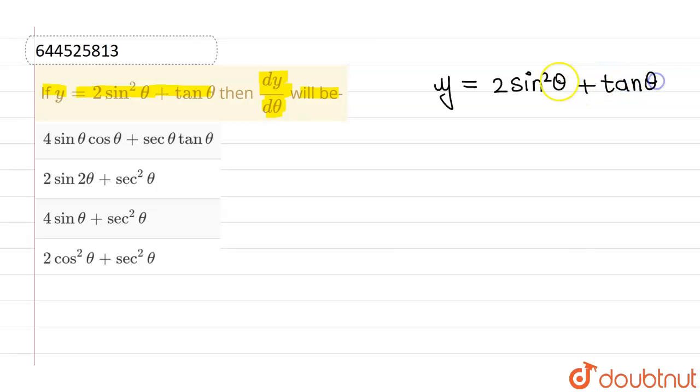Okay, and we need to find out dy over dθ, and dy over dθ will be equals to 2 times d over dθ of sin²θ plus d over dθ of tanθ.